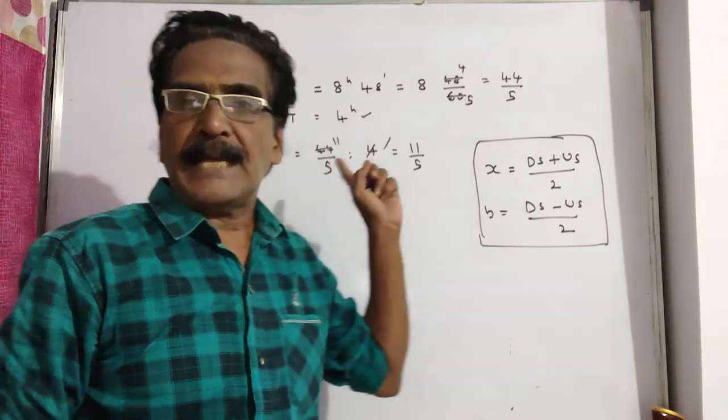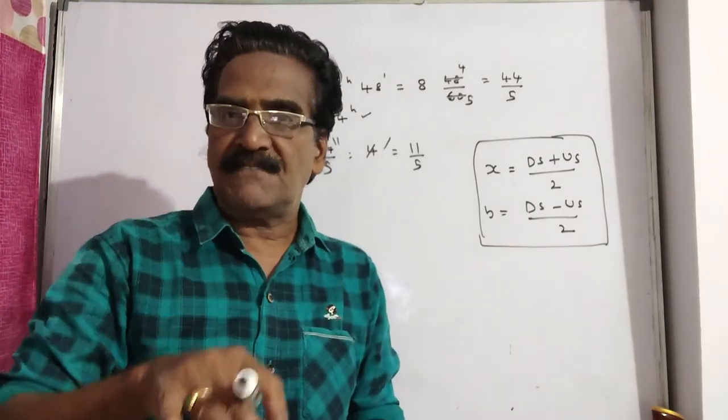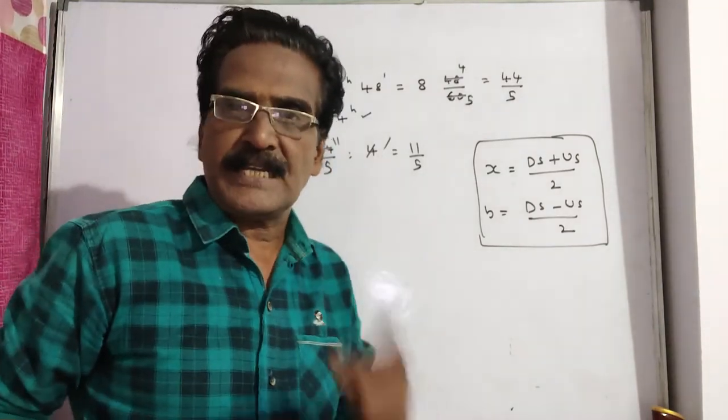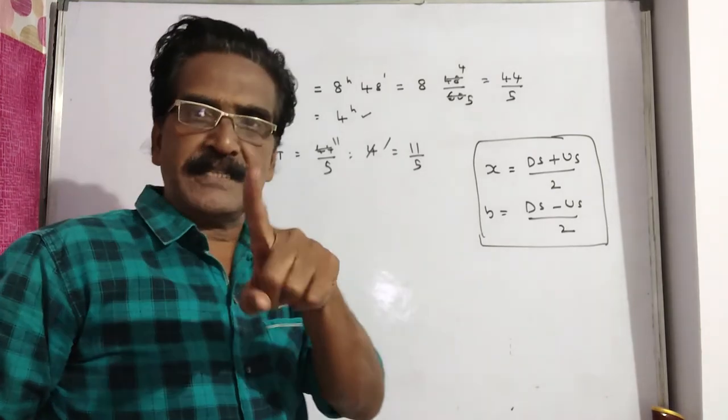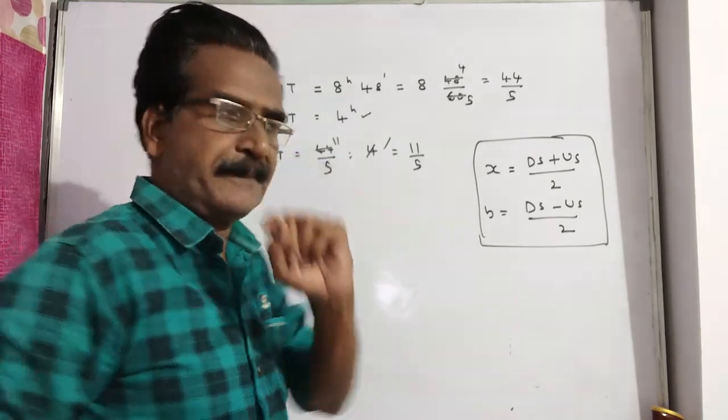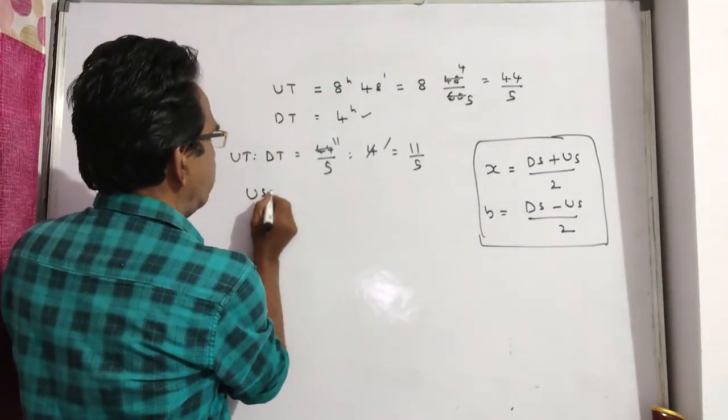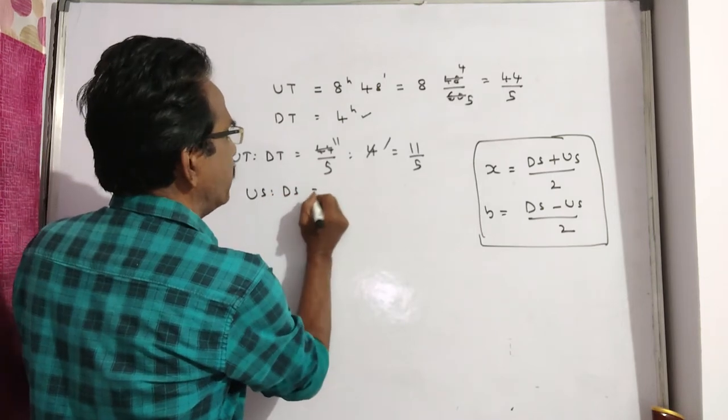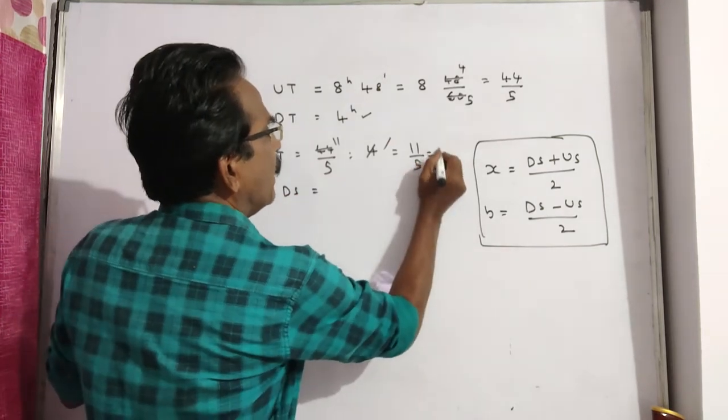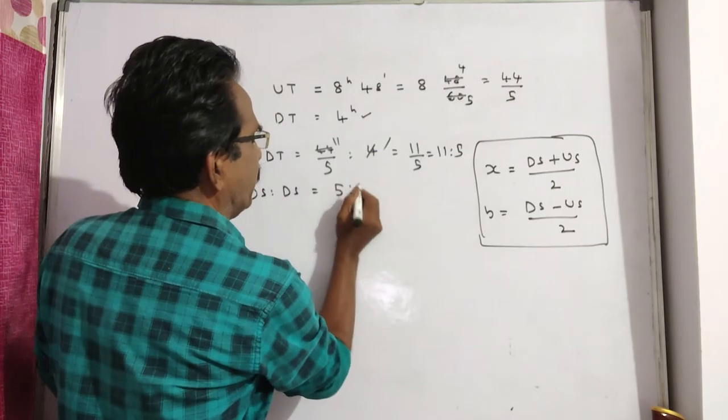When we reverse the times ratio, we get the ratio of their speeds. So upstream speed to downstream speed equals 5:11. Now we know downstream speed (ds) and upstream speed (us).